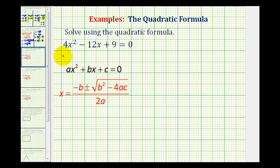So we need to recognize that a = 4. Because of the minus sign here, b = -12 and c = 9.